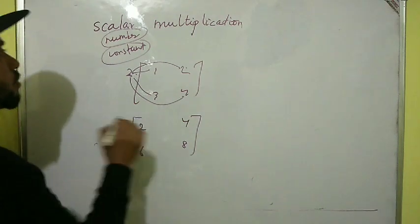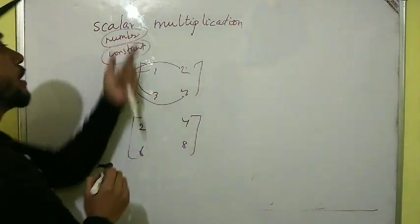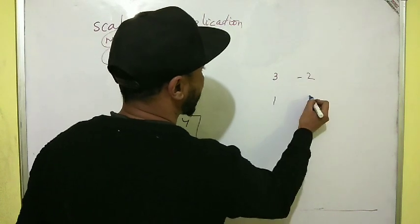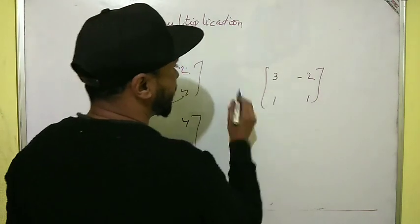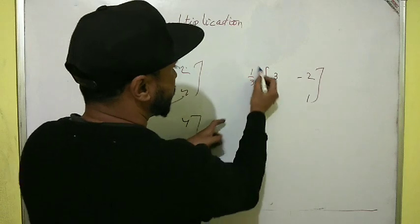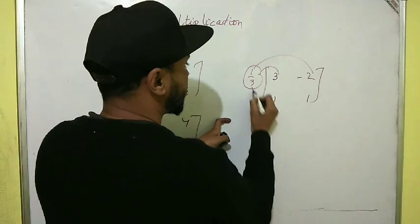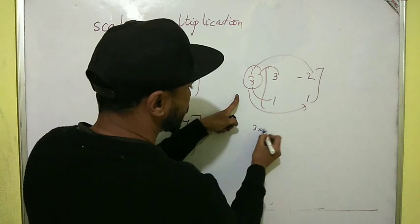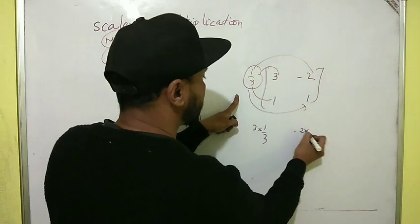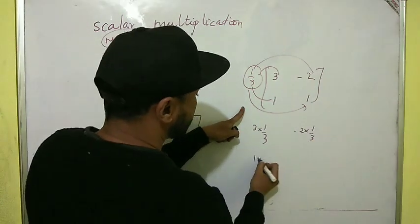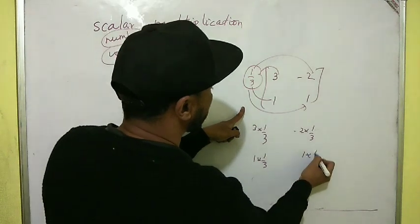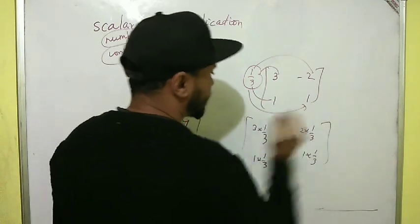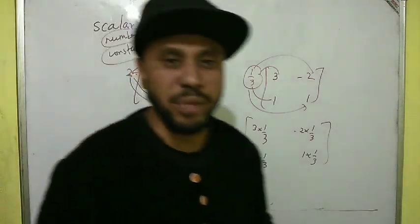This is how we multiply a matrix by a number. One more example: take the matrix [3, -2, 1, 1] and multiply by 1/3. We multiply each element by 1/3: 3 times 1/3, minus 2 times 1/3, 1 times 1/3, and 1 times 1/3. Whatever values we get will be the required matrix.